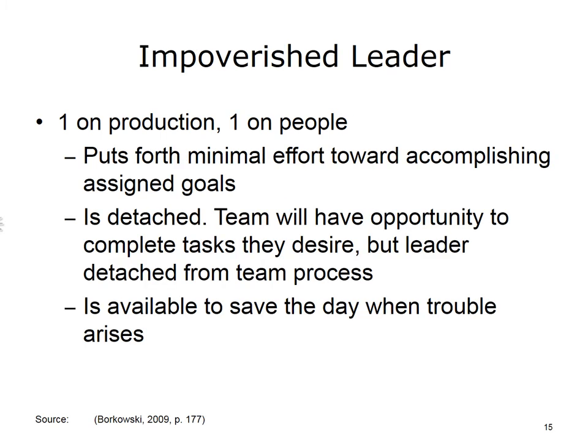When discussing the impoverished leader, it is represented by a 1 on production and a 1 on people — meaning low task and low focus on relationships. This type of leader puts forth minimal effort toward accomplishing assigned goals and tasks, focusing on only completing the amount of work that is absolutely required to sustain a leadership position within an organization. The group of individuals working with this type of leader will have the opportunity to complete the assigned task as they desire; however, in allowing a team to do whatever it wishes, the impoverished leader may appear to come in and save the day when trouble arises.